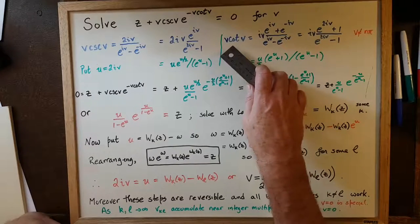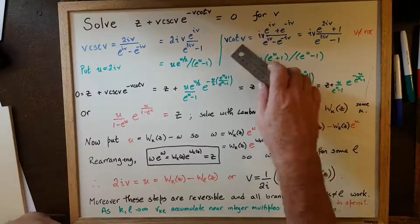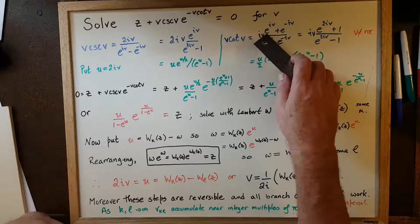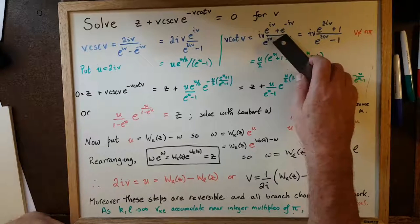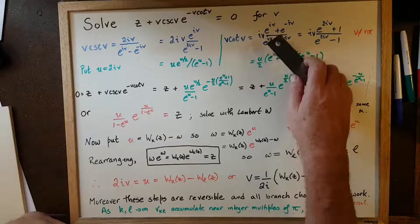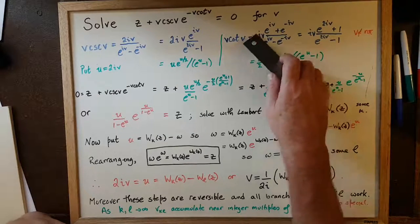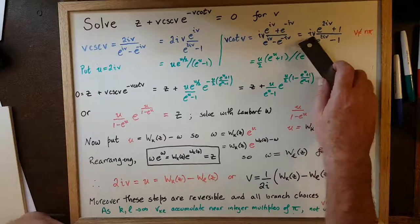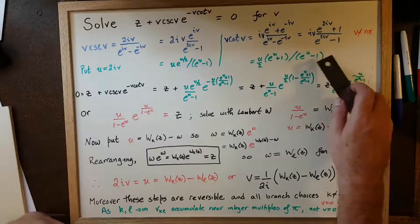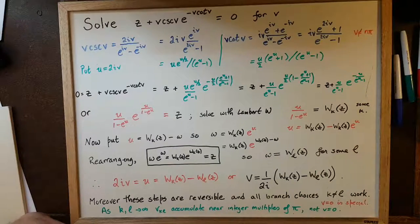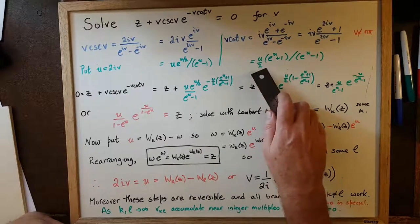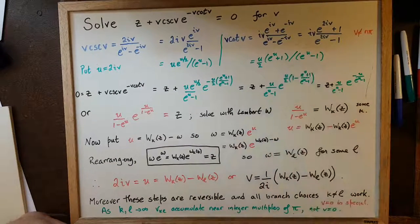Similarly, v cotangent v can be expressed using cosine v over sine v. Cosine v is e to the iv plus e to the minus iv divided by 2, and sine v is e to the iv minus e to the minus iv over 2i. The 2s cancel and 1 over i appears, giving e to the iv times e to the 2iv plus 1 over e to the 2iv minus 1, after multiplying top and bottom by e to the iv. Using the same substitution u = 2iv, this gives u over 2 times e to the u plus 1 over e to the u minus 1.